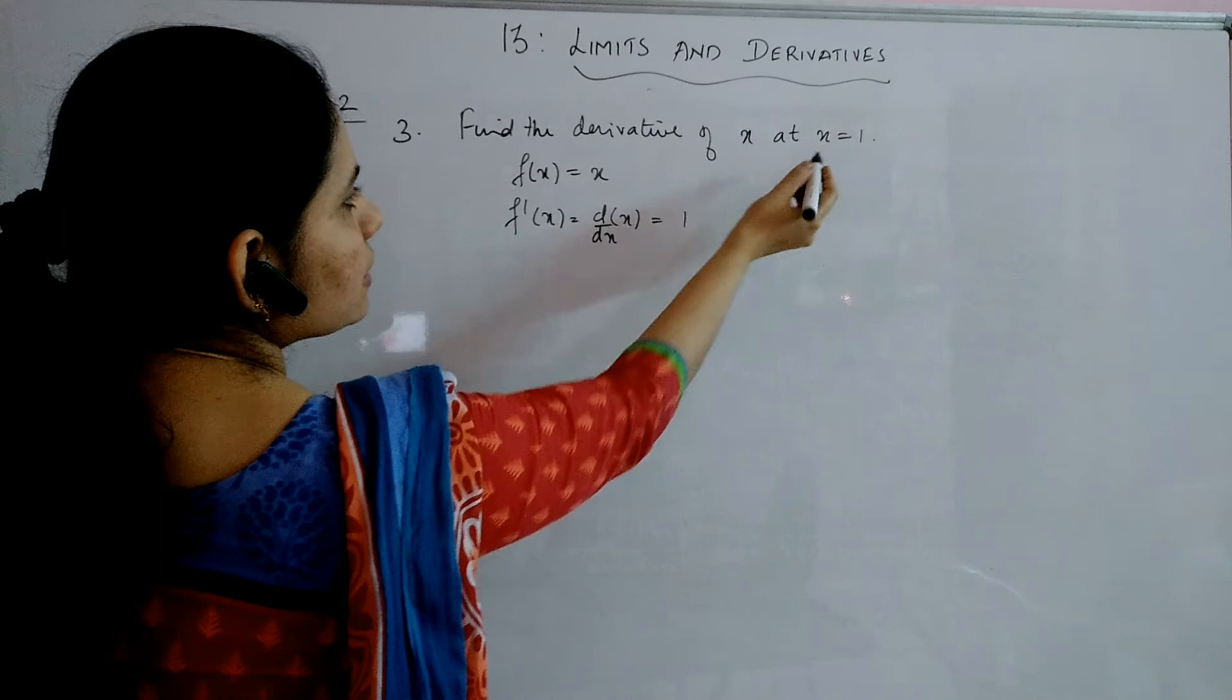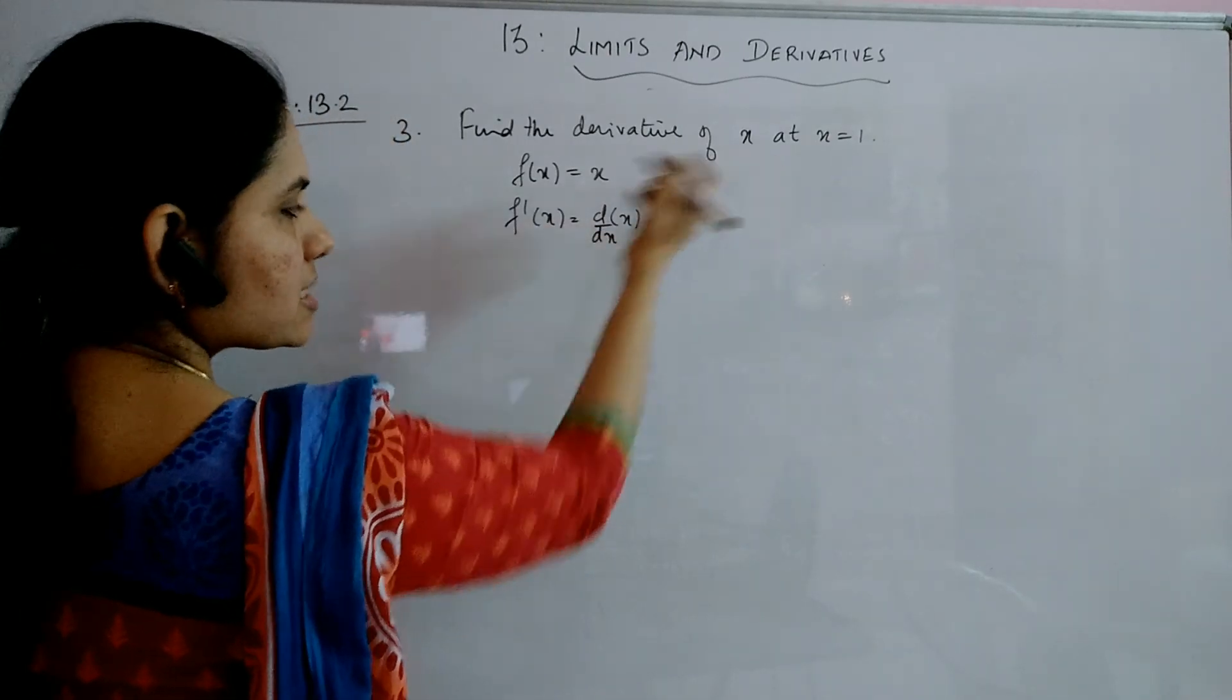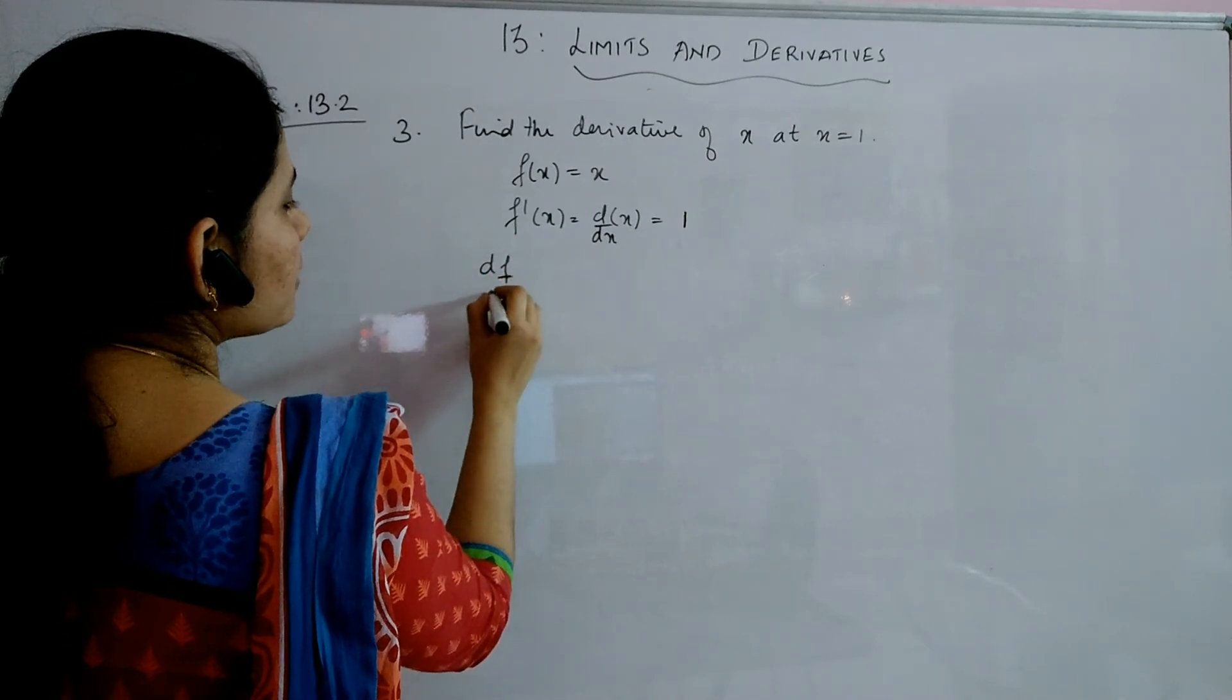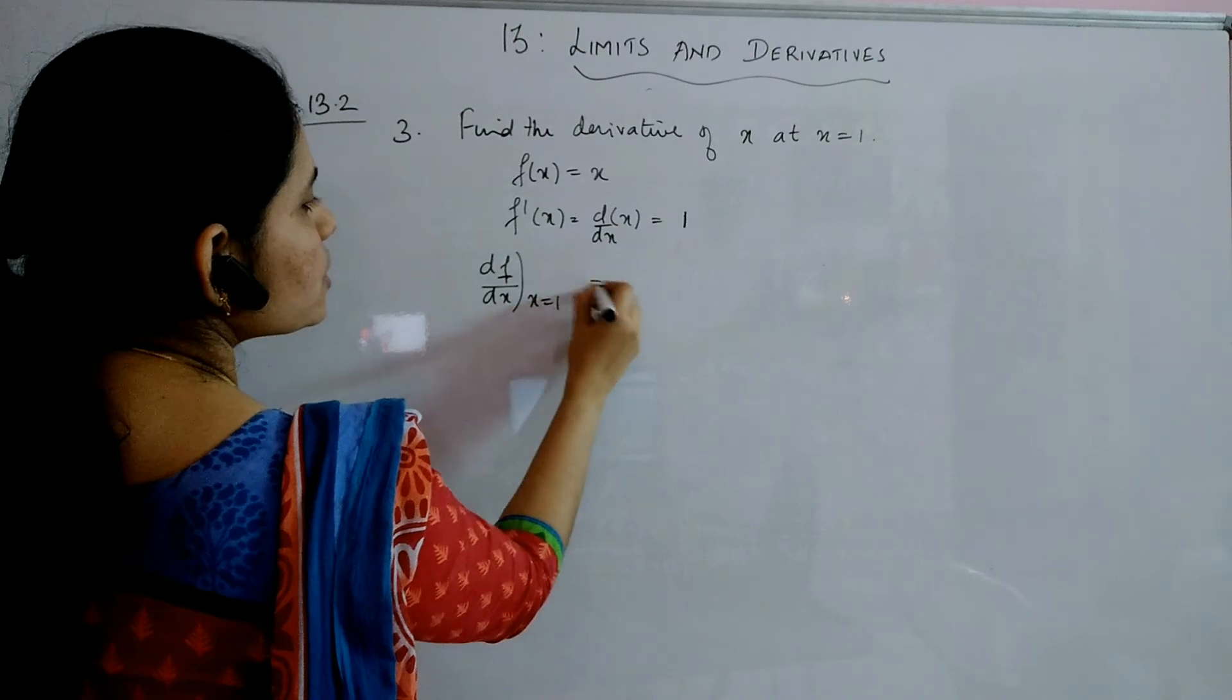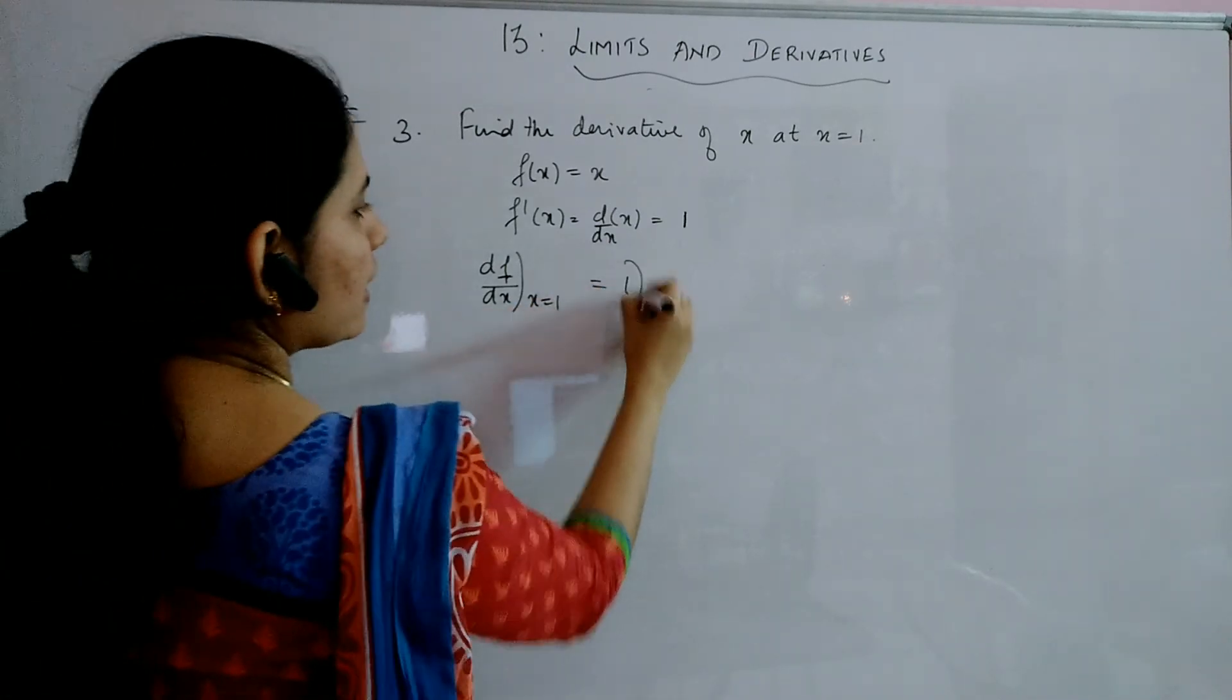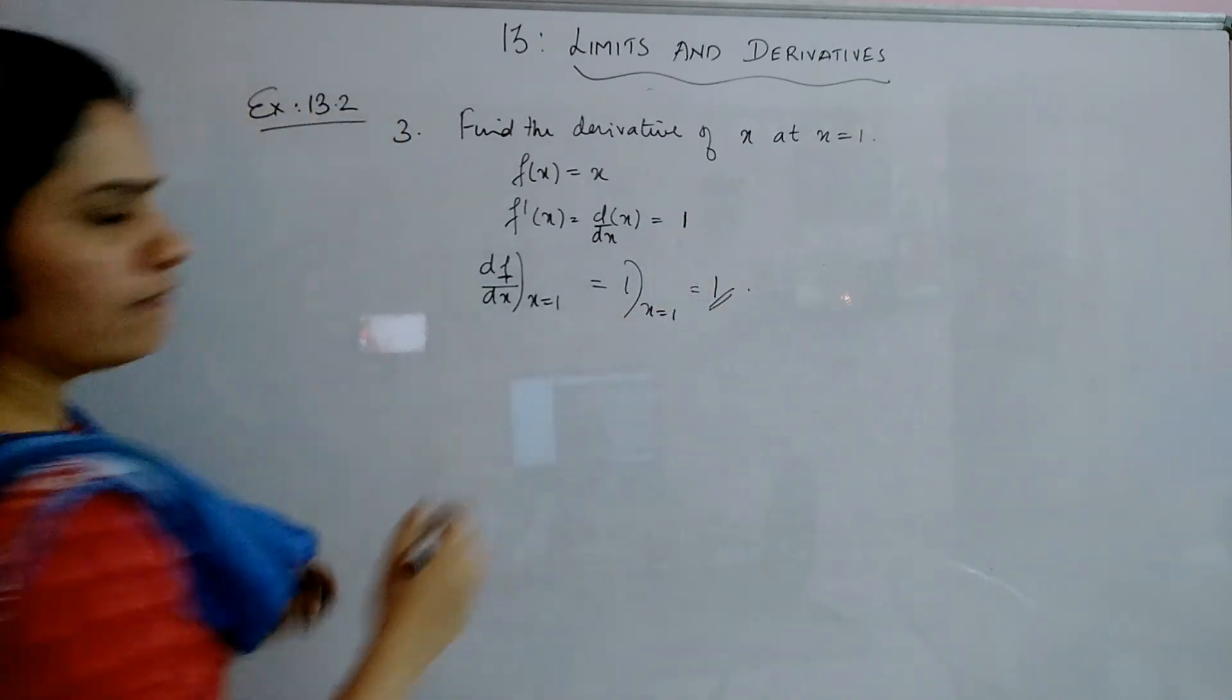And again, you can see that since the answer, that is the derivative, does not contain any x term, then d by dx of the given function at the point x equal to 1 will not alter. It is 1 at x equal to 1. You do not have any x there. So the answer is 1 only.